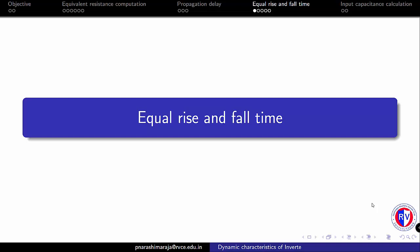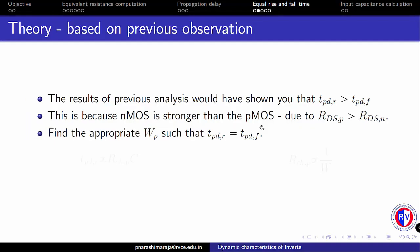Our third objective is to find the appropriate width for our PMOS to have equal rise and fall time. The result of our previous analysis showed us that TPDR is much greater than TPDF, meaning the time required to charge the output capacitor is much larger than the time to discharge. This result shouldn't surprise you since we already found that the resistance of our PMOS is much greater than the resistance of our NMOS. So in this video we will try to identify an appropriate size for the PMOS such that we can achieve TPDR equal to TPDF.